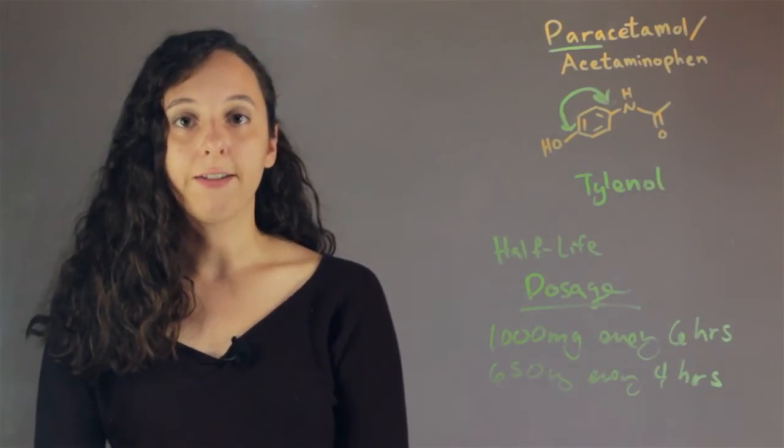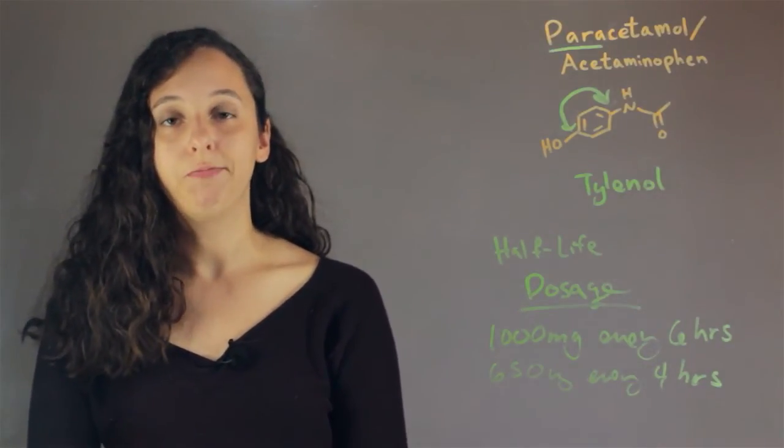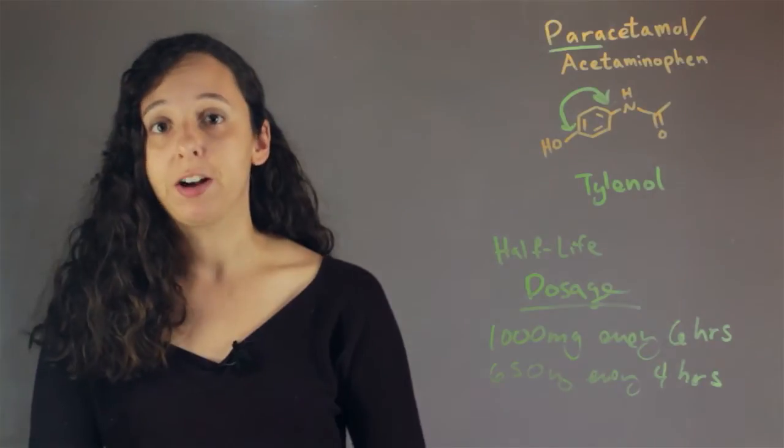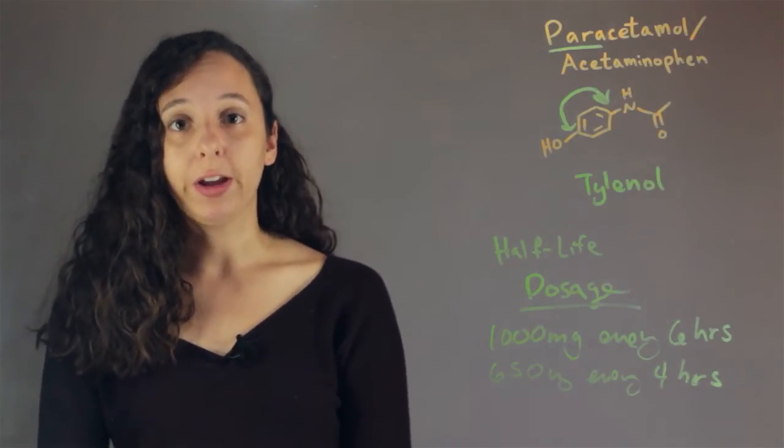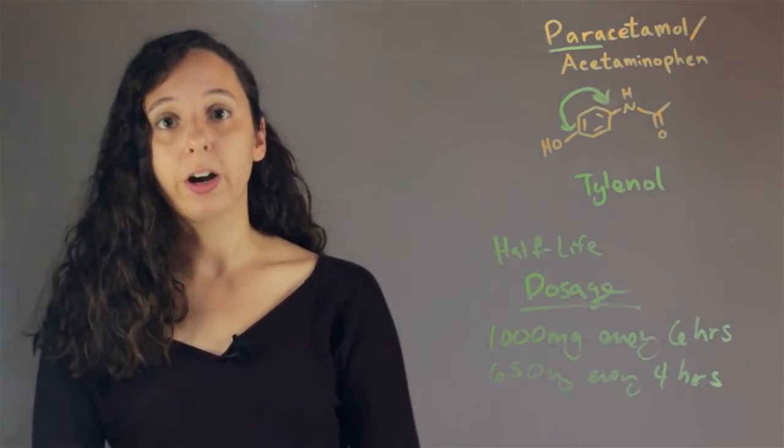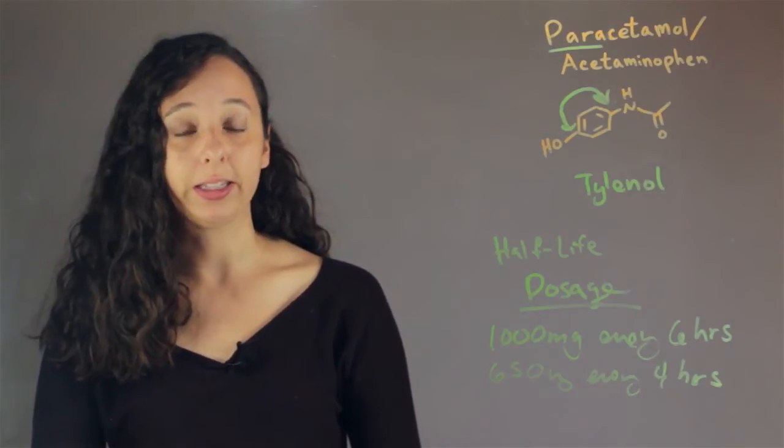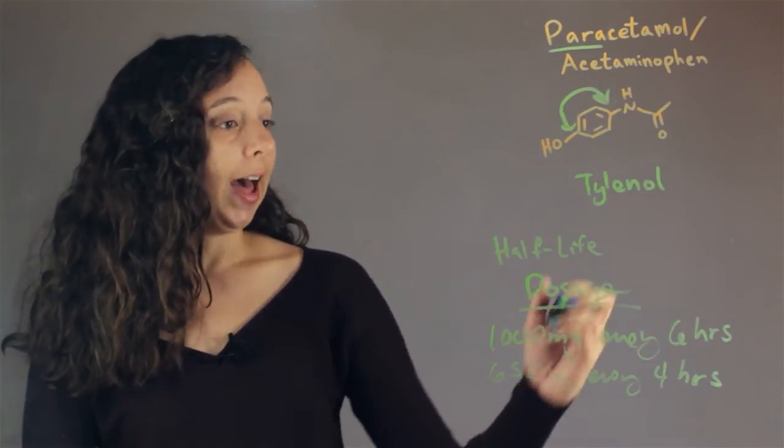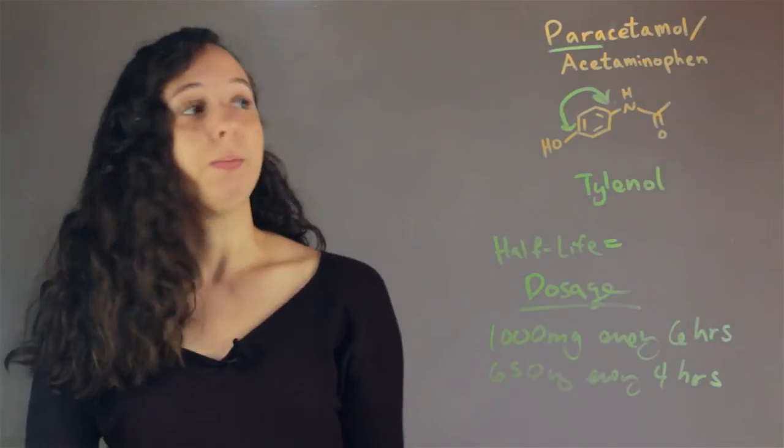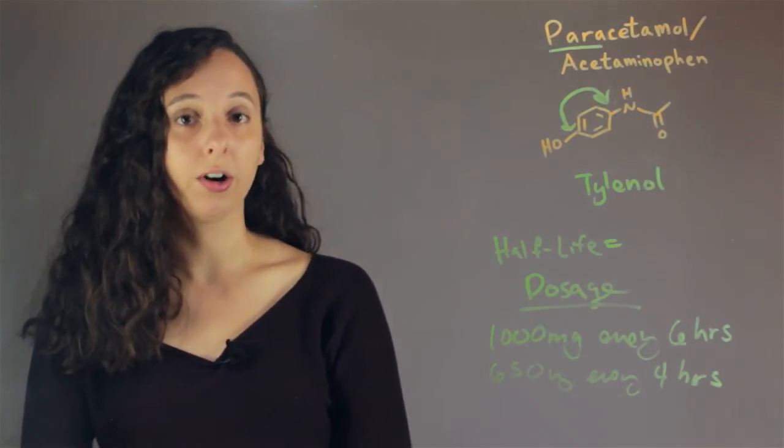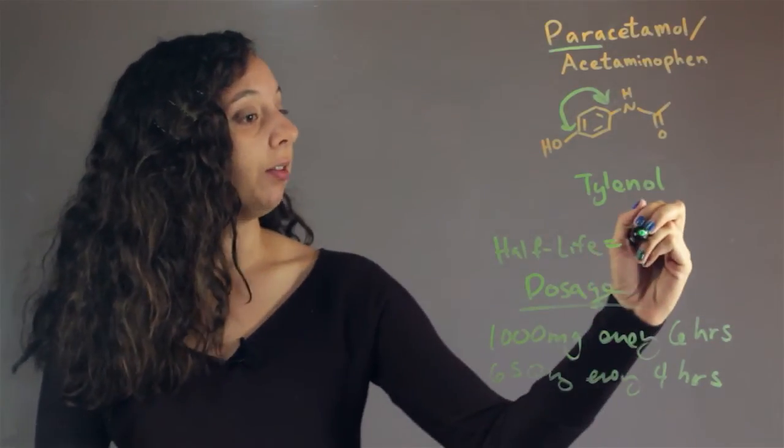And so our half-life, we actually can't calculate it on our own or just randomly guess it. We really have to wait for scientists to do the experiments and then tell us. So that's the only way we can calculate these half-lives. So the half-life of paracetamol, or acetaminophen, or Tylenol, happens to be around two to three hours.